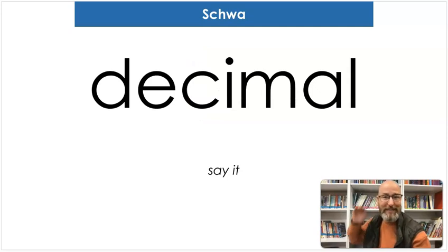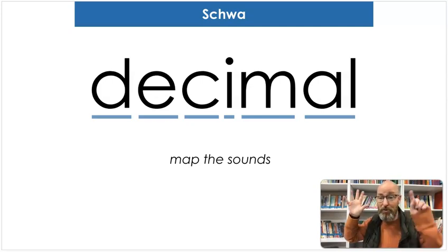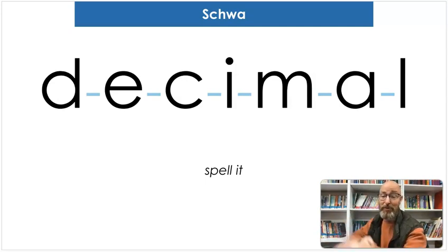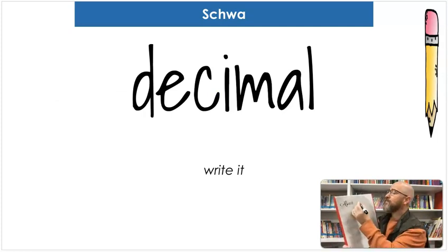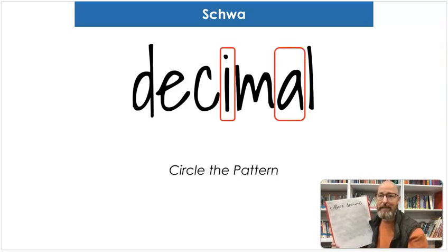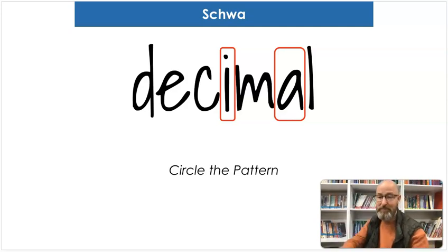Our next word is 'decimal.' Say decimal. Map the sounds: D-E-C-I-M-A-L. Decimal. I'm going to trick you on this one. Spell it: D-E-C-I-M-A-L. Decimal. And let's write it: D-E-C-I-M-A-L. Where's the schwa? It has both the short I and the short A. When you have the -al sound, the A-L says 'ul' — it's 'ul,' so it has that schwa sound. And of course the I is unstressed, so that would be a schwa too. Decimal — it is the most common vowel.